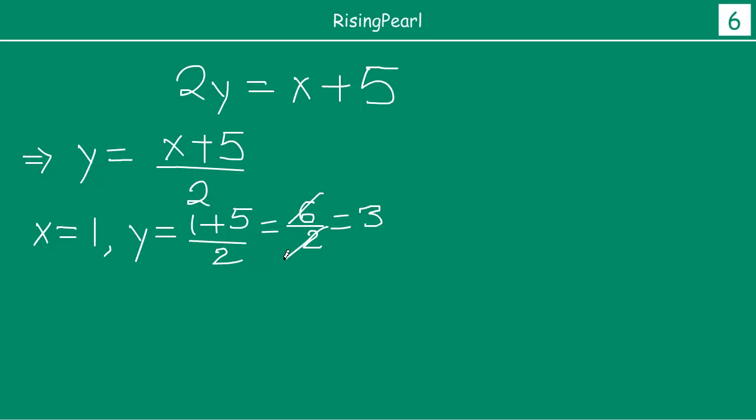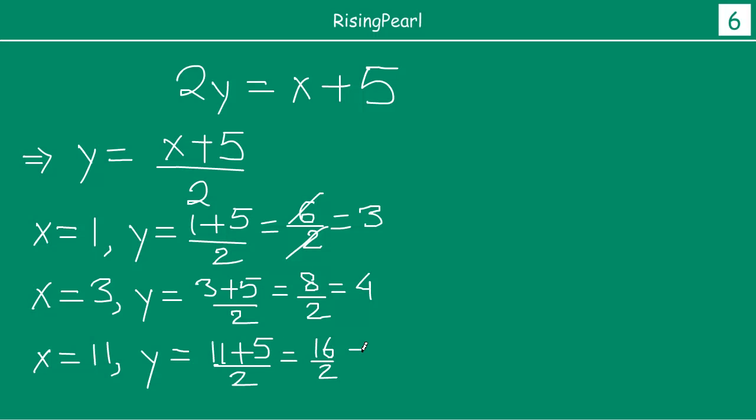Similarly at x equals to, suppose 3, y will be equal to, in place of x we put 3, 3 plus 5 by 2, so 3 plus 5 is 8 by 2, so this becomes 4. Similarly also let us take one final value, suppose x is equal to, let us put something like, suppose 11. If x is 11, then it will be 11 plus 5 by 2, which is going to be 11 plus 5 is 16 by 2 which is your 8.